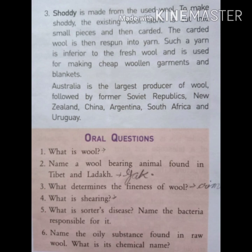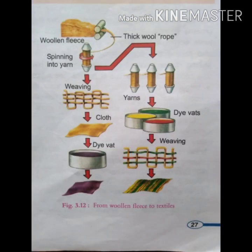Australia is the largest producer of wool, followed by the former Soviet Republics, New Zealand, China, Argentina, South Africa, and Uruguay. A diagram shows the different processes of wool manufacturing, including spinning the woolen fleece into yarn and dyeing, illustrating all the steps for making wool.